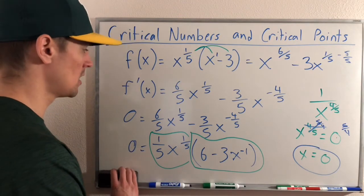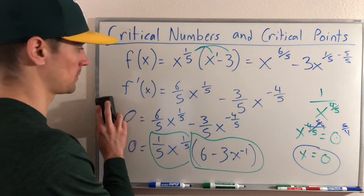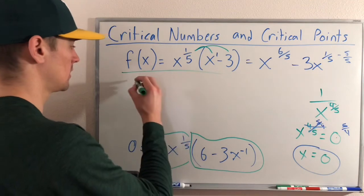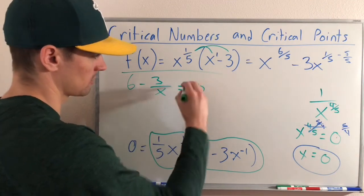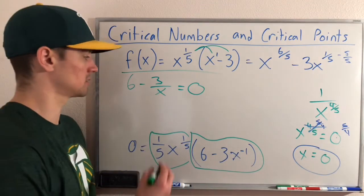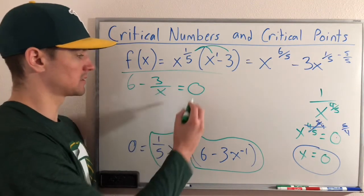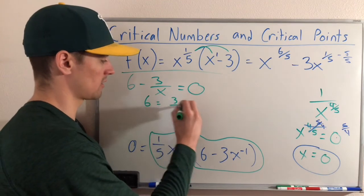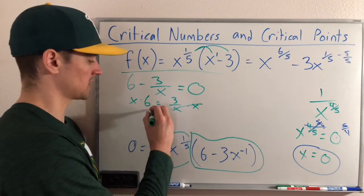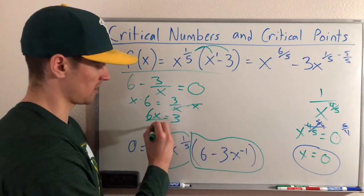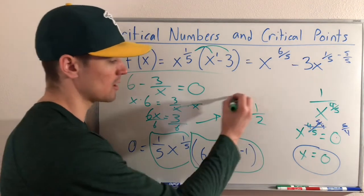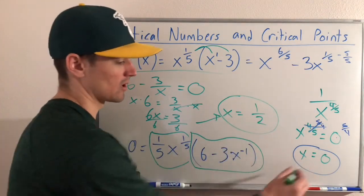To solve 6 minus 3 over x equals 0, we add 3 over x to both sides to get 6 equals 3 over x, then multiply both sides by x to get 6x equals 3, then divide both sides by 6 to get x equals 1/2. So our critical numbers are x equals 0 and x equals 1/2.